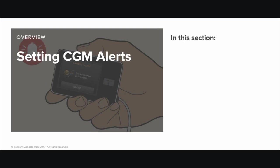In this section you will learn about some of the alerts you may receive from your TSLIM G4 system. The section begins with high and low alerts, which tell you when your sensor glucose readings are higher or lower than the targets you set. Next, the section explains rise and fall alerts, which tell you when your glucose levels are rising or falling and how quickly the levels are changing.